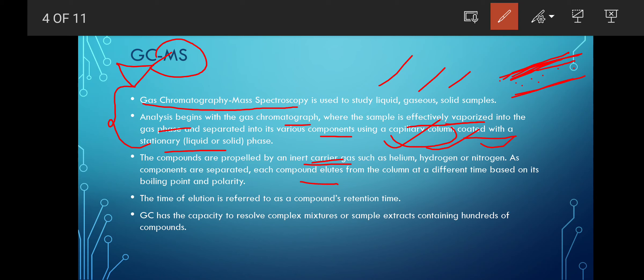Elutes are what we learned in the last GCMS process - the gas particles which are separated from a mixture. Each particle is known as the elute. These elutes go from the column at different times based on the boiling point and polarity. The time of elution is known as retention time.